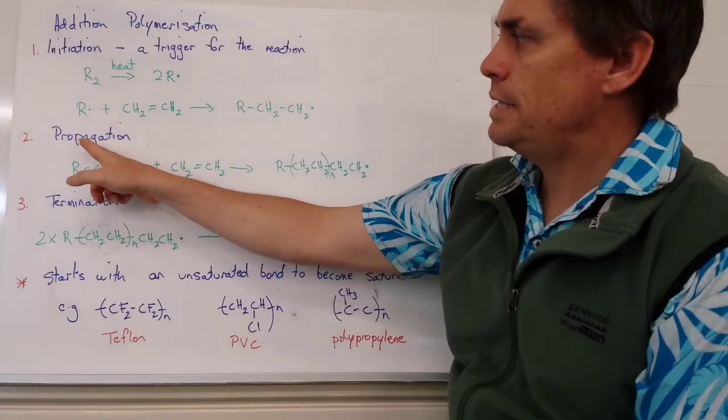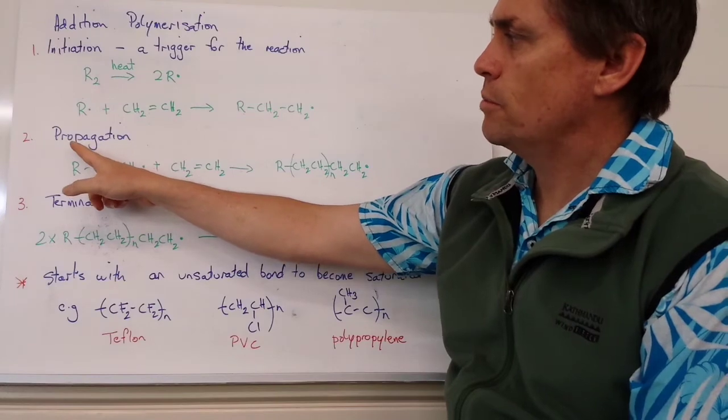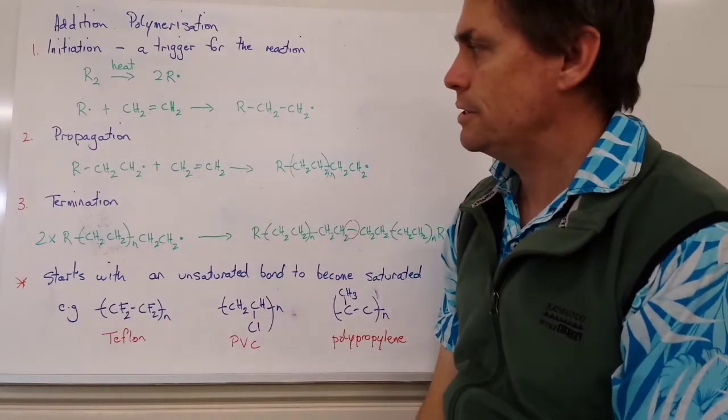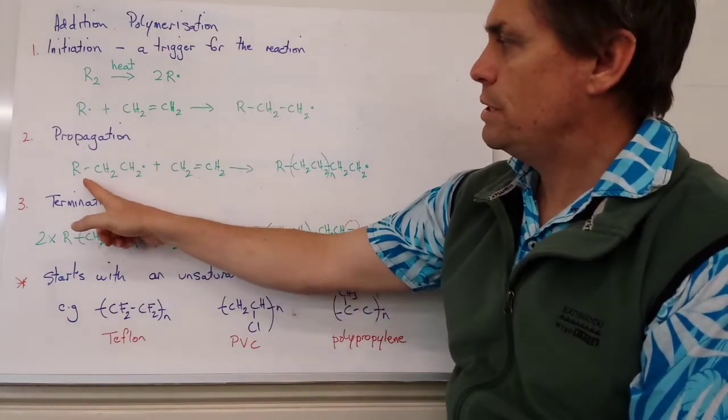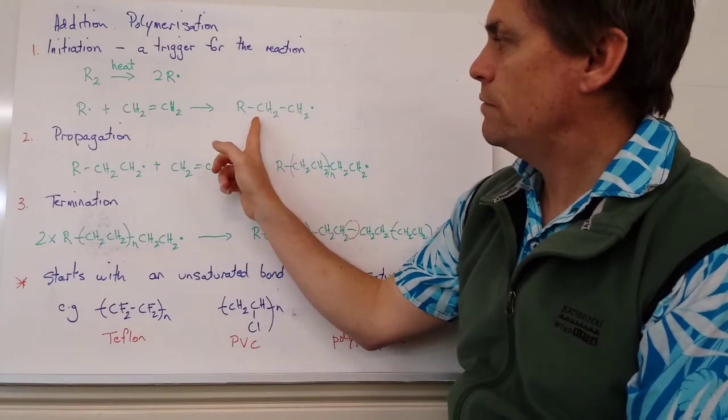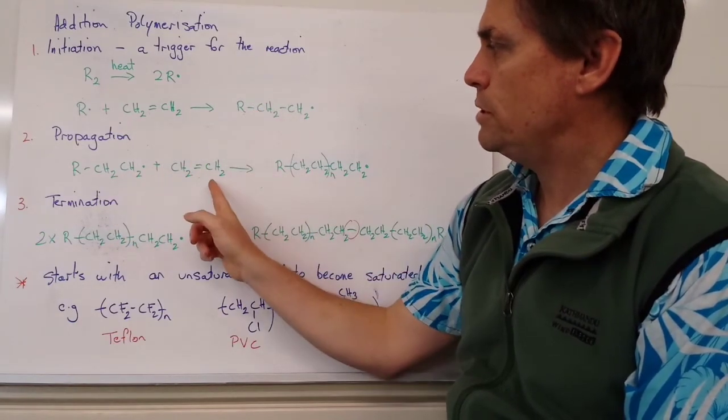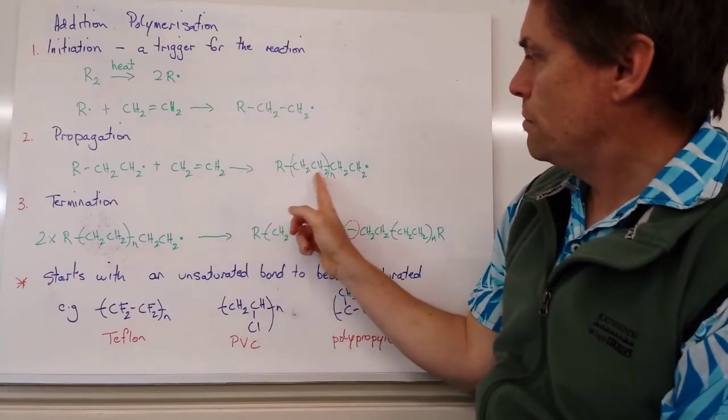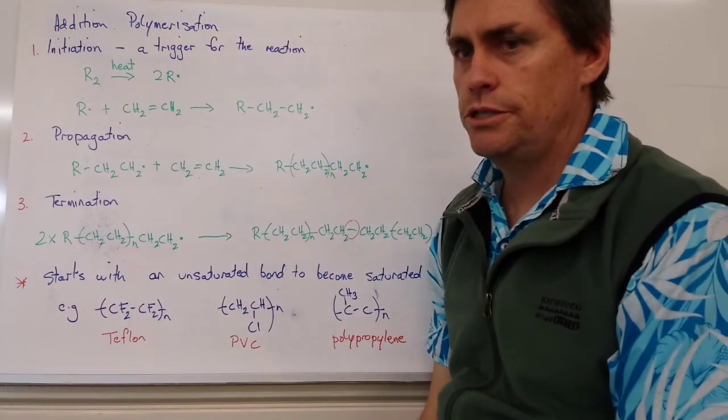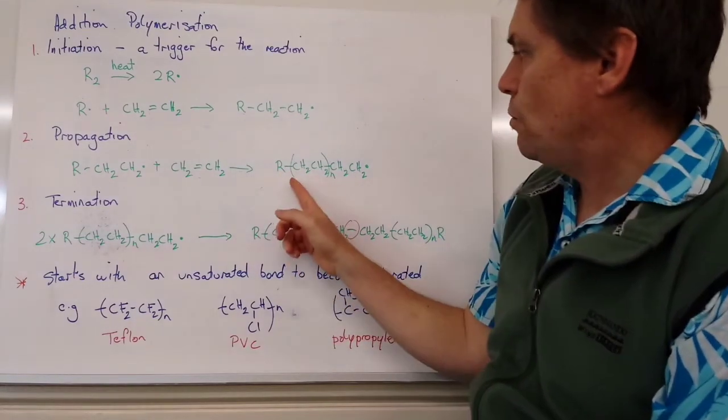And this allows us to move into the second stage of addition polymerization, which is called the propagation step. So we start with our molecule from the first step. In the presence of our monomer unit, we will then form two units. So we'll form what's called a dimer.